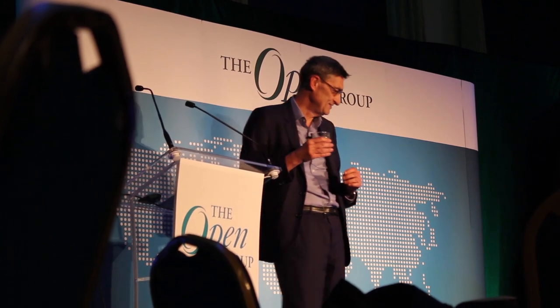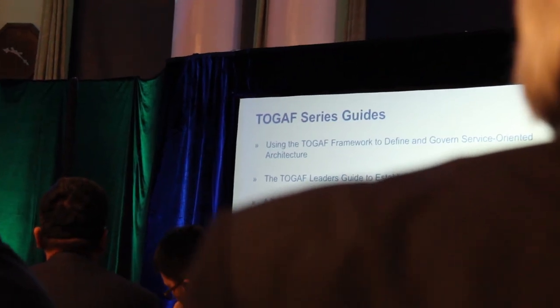Archimate can be used to support TOGAF in providing a standard modeling notation and language for the delivery of models and an architecture. On the other hand, Archimate focuses on the modeling processes, therefore it does not recommend or address any specific methodology, process, or framework to support EA as a practice. In these areas, TOGAF is an appropriate support mechanism for Archimate.